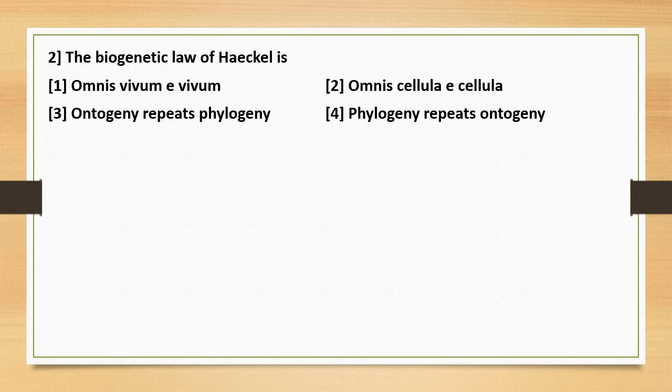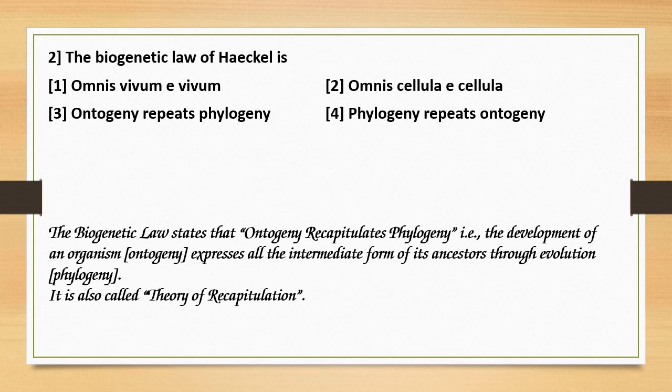Question number 2. The biogenetic law of Haeckel — options: 1. Omnis vivum e vivum. 2. Omnis cellula e cellula. 3. Ontogeny repeats phylogeny. 4. Phylogeny repeats ontogeny. The biogenetic law is proposed by Haeckel. It states that ontogeny repeats or recapitulates phylogeny — that is, the development of an organism expresses all the intermediate forms of its ancestors through evolution. This biogenetic law is also called the theory of recapitulation. So the correct answer is option 3.